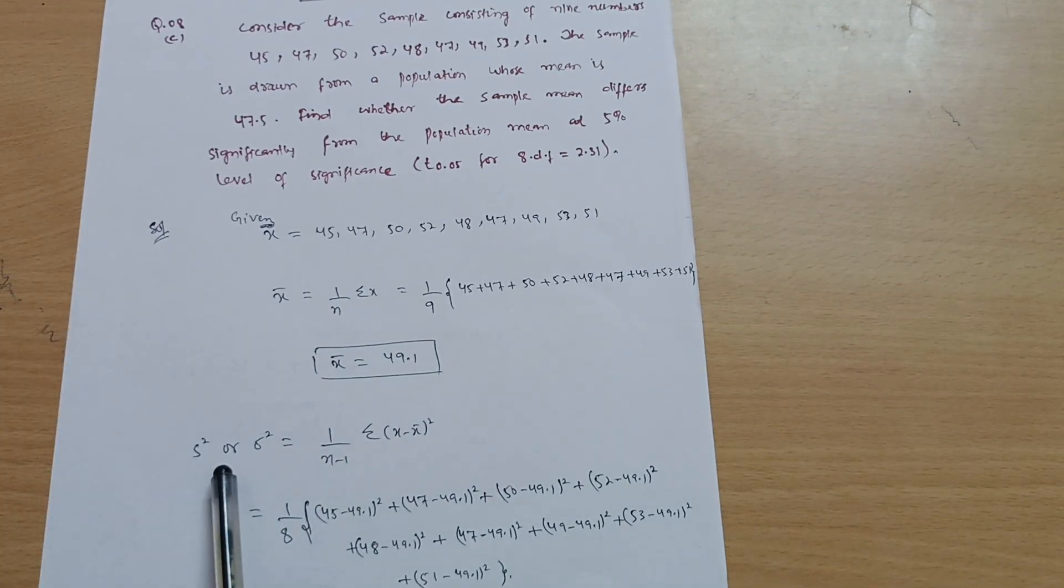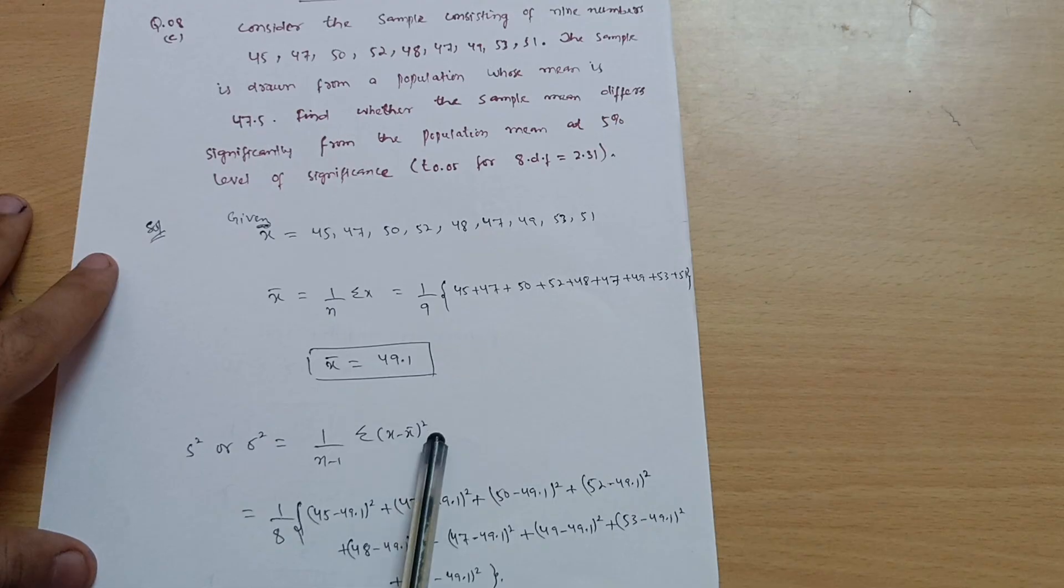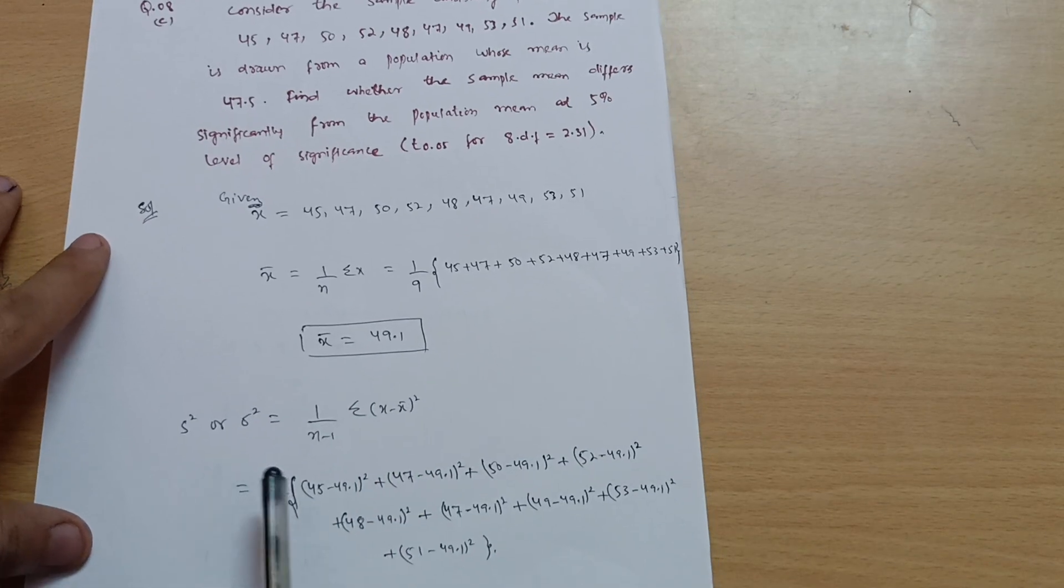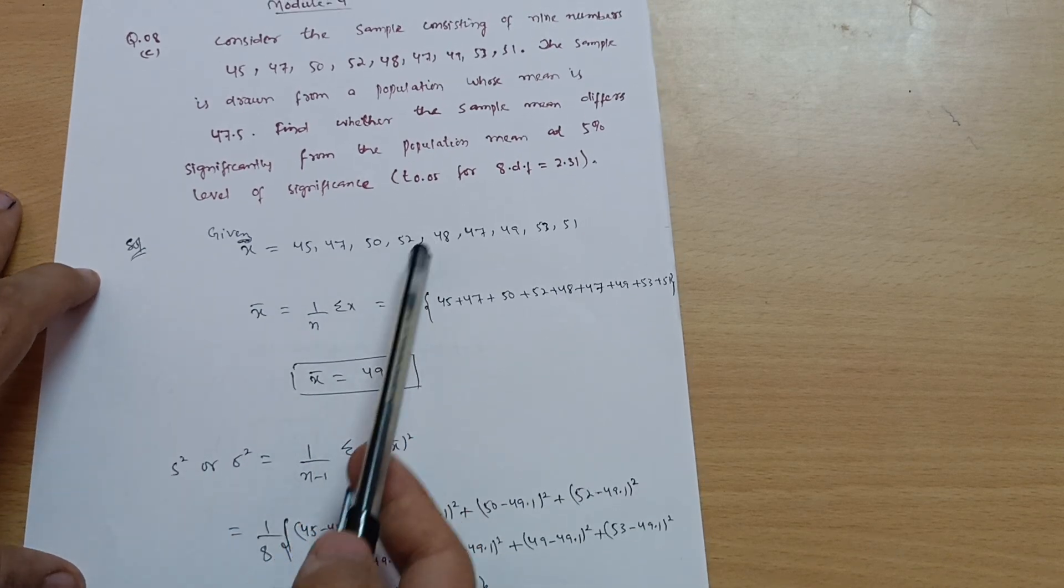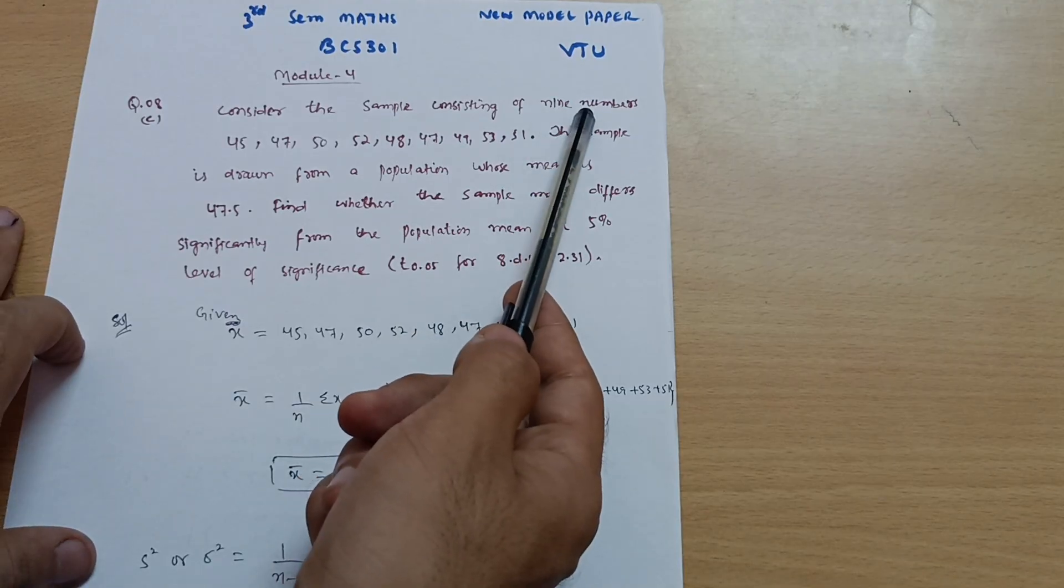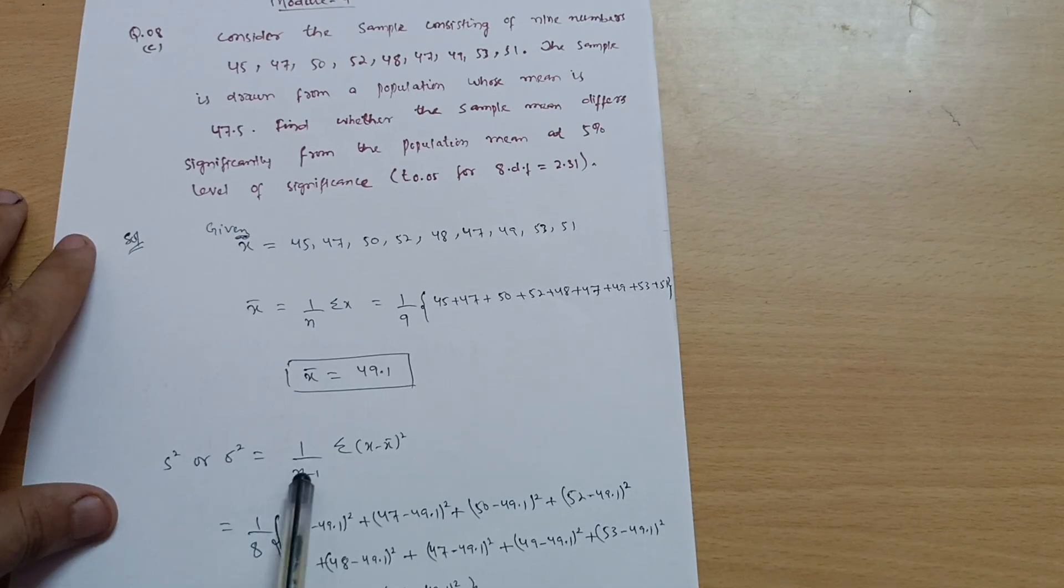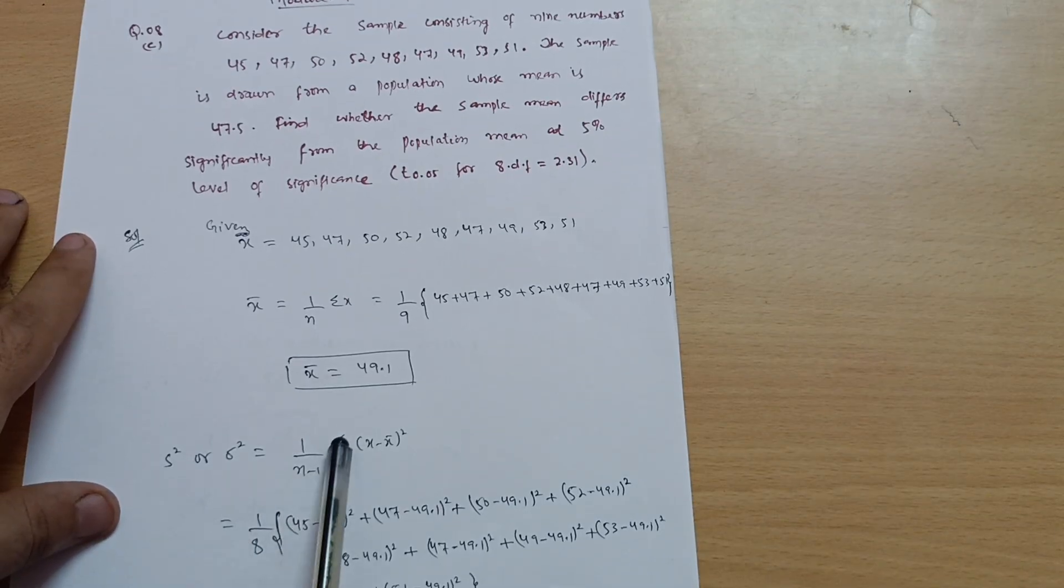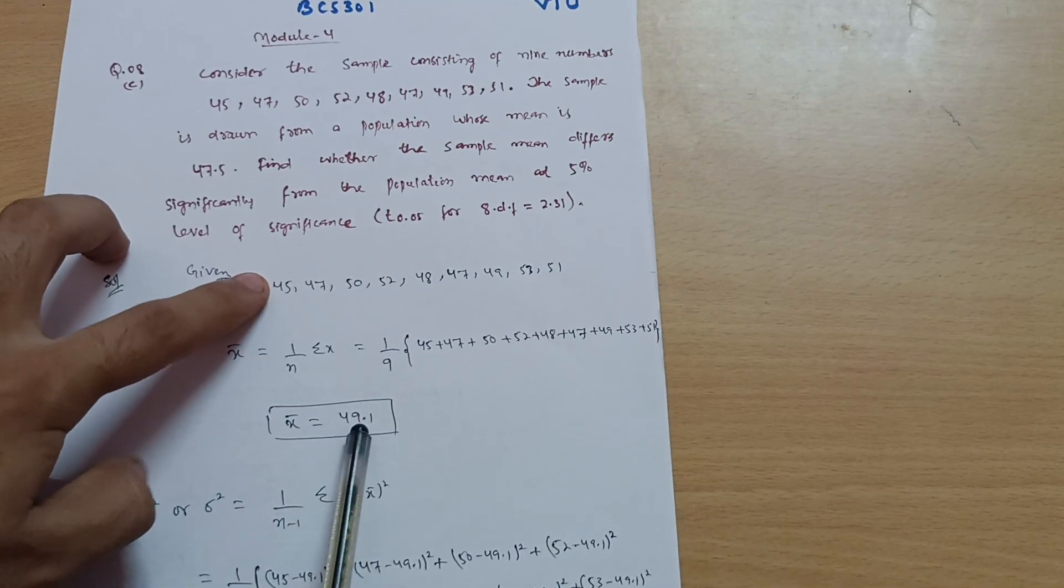Now we have the variance. We have the formula for S square or sometimes it is denoted by sigma square, which is equal to 1 divided by N minus 1 summation of X minus X bar whole square. This is the formula which we have for the variance, which is equal to 1 upon 8. This is N value is 9 in the given problem. See here, 9 numbers are there, a sample consists of 9 numbers. So we have N is equal to 9, so 9 minus 1 is 8. Summation of X minus X bar, so what is the X value? 45. X bar is 49.1.